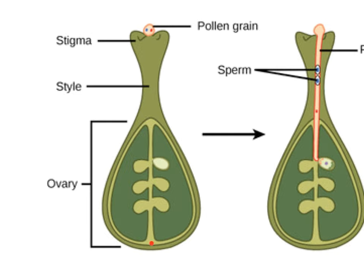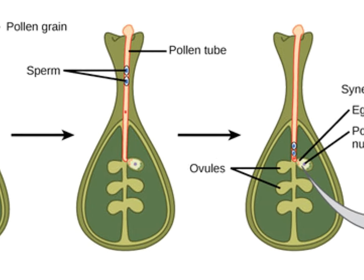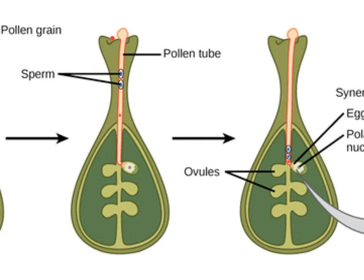Within the ovary, we have several ovules, and the ovules are the structures that house the female gamete — the egg. Now once the pollen has landed on the stigma, cells within the stigma will release various compounds and cause the pollen grain to germinate and form a pollen tube. The pollen grain will then release the two sperm cells that it has within it, and those two sperm cells will travel down the pollen tube to the ovule.